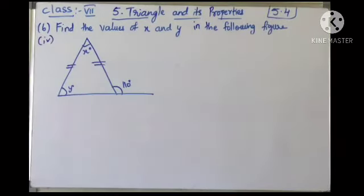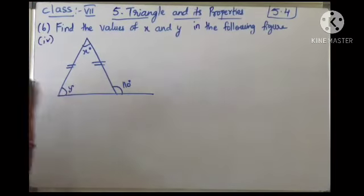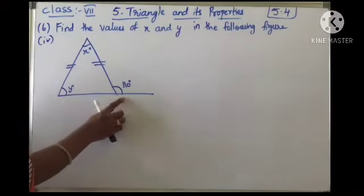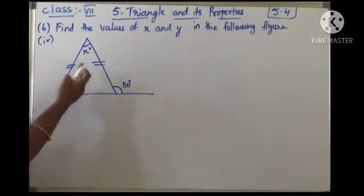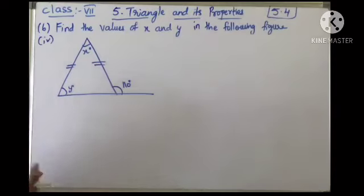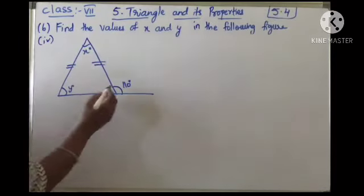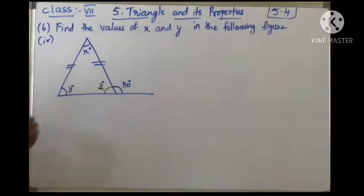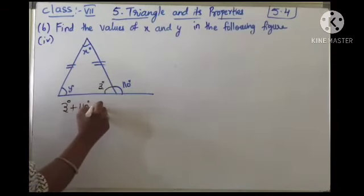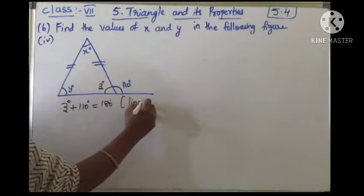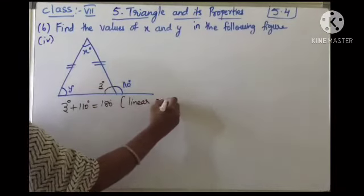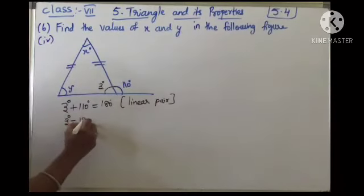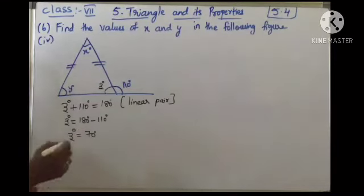Next, the fourth figure. x and y are interior angles and 110 is the exterior angle. I can use the exterior angle property: 110 equals x plus y. But we don't know both values, so first I'll let this angle be z. z plus 110 equals 180 — that's a linear pair. So z equals 180 minus 110, which is 70 degrees.